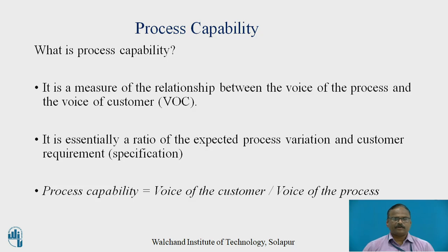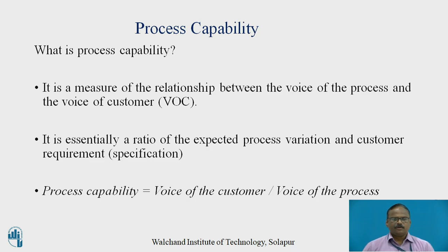Process capability is a measure of the relationship between the voice of the process and the voice of the customer. One is relevant with the process, and another is relevant with the customer, because the customer gives specifications for a product and the process must follow a mean in order to get dimensions within the tolerance. It is essentially a ratio of the expected process variation and customer requirements, which is called specification. Process capability is equal to voice of customer divided by voice of the process.